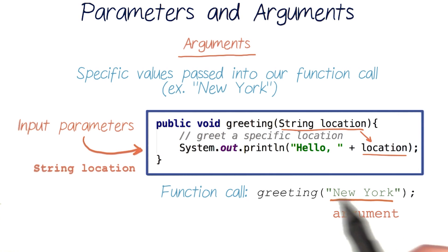When we call our function, our argument has to match the type of parameter we expect in our function. So in this case, New York has to be a string.